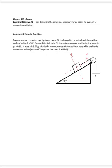Here is an example of a problem for the first LO in chapters 5 and 6 where we would have equilibrium. The scenario is that we have two masses connected by a light cord over a frictionless pulley. One of the masses is on an inclined plane with an angle of 30 degrees. The coefficient of static friction between mass A and the inclined plane is 0.65. If mass A is 5 kilograms, what's the largest that mass B can be while the blocks remain motionless? We're going to assume that if they move, mass B will fall.